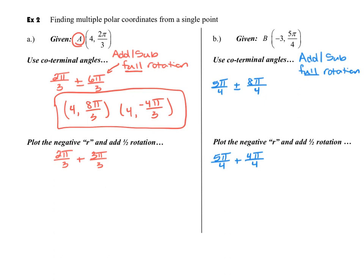We could do the same thing with our point B from up above, I'm going to add and subtract that full rotation of eight pi over four. And I'm going to keep the R value the same. So I'm going to have a negative three,